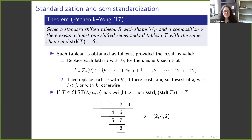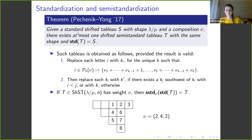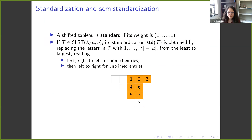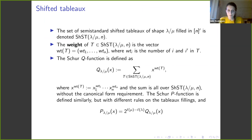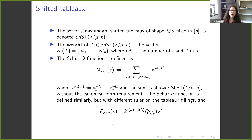A quick question: for the Q Schur functions computed with these tableaux, are these the ones giving us Schubert classes for the odd orthogonal Grassmannian? No, I think the Schubert classes are the P functions.